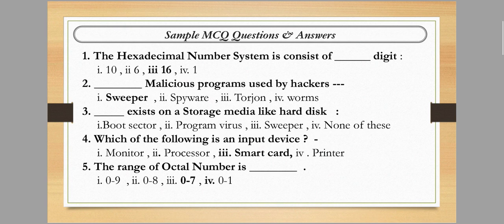The first question is: the hexadecimal number system consists of how many digits? We know that the hexadecimal number system consists of 16 digits. So option number three is the correct answer.